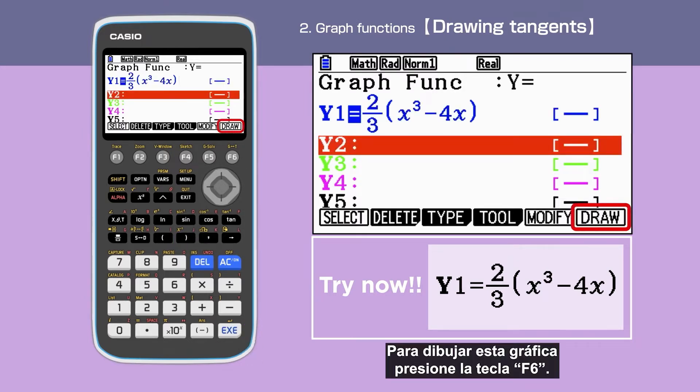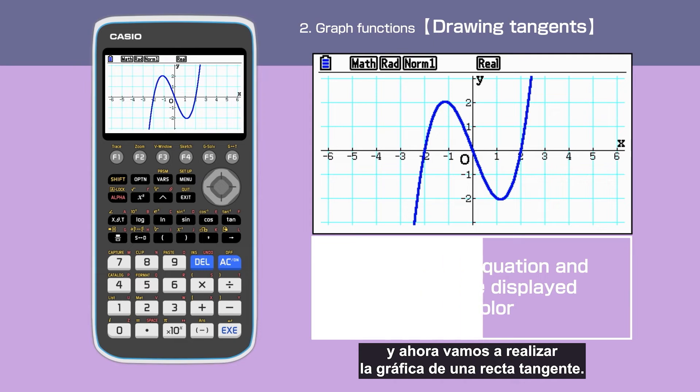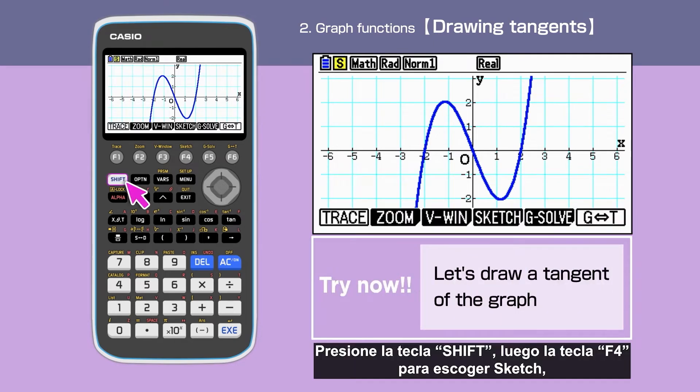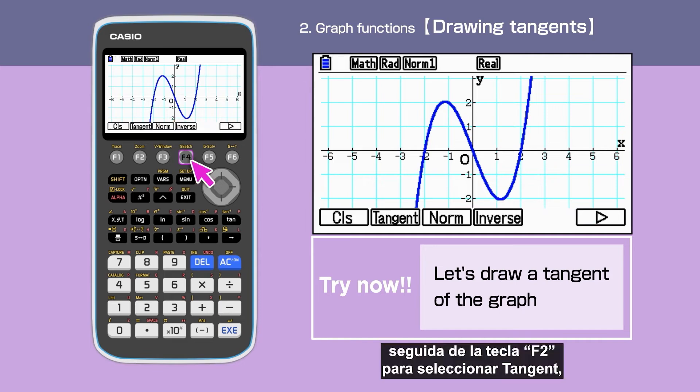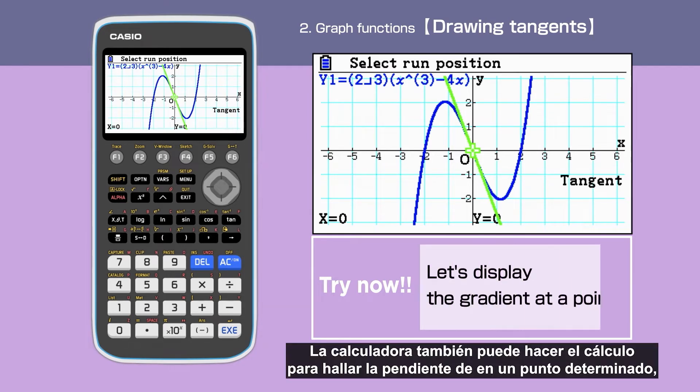To draw this graph, press F6. We have drawn a cubic graph and now we will draw a tangent. Press Shift, then F4, Sketch, followed by F2 to select tangent. The tangent is drawn. The calculator can also work out the gradient at the point.